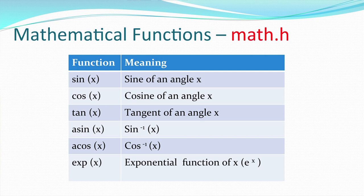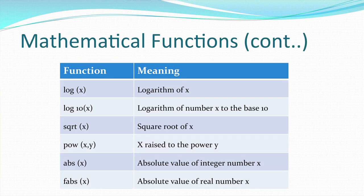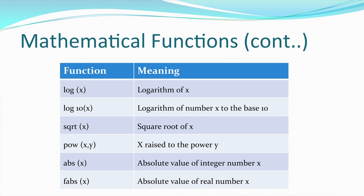The mathematical functions from math.h include: sin(x) — sine of angle x; cos(x) — cosine of angle x; tan, asin, acos — inverses of sin and cos; an exponential function; logarithm; logarithm to base 10; square root; pow; and absolute value of an integer or real number. Using these functions according to their syntax gives the required output for mathematical operations on input data. All these functions are defined in the header file math.h.